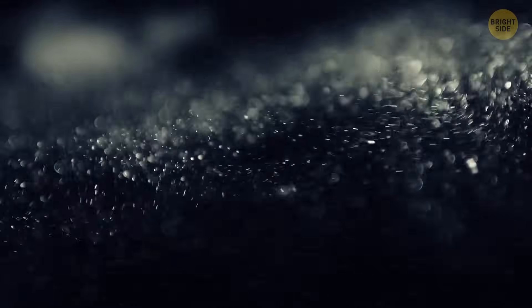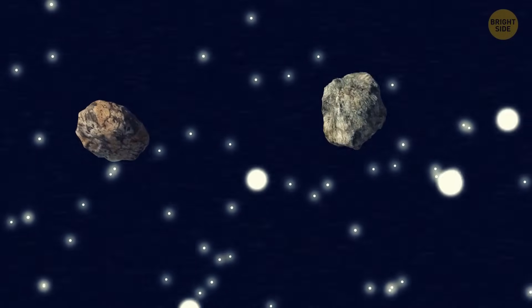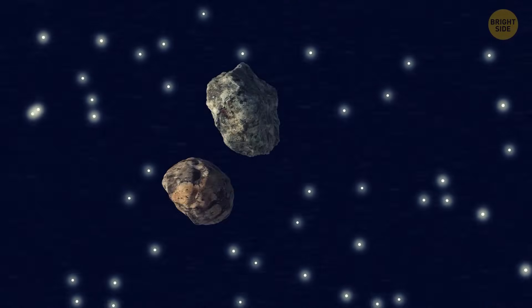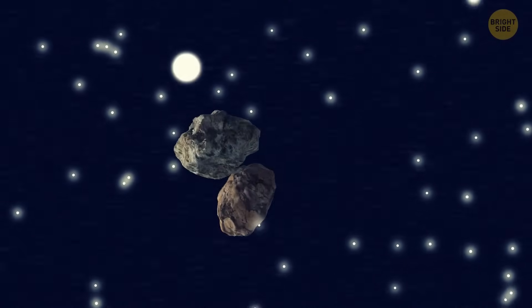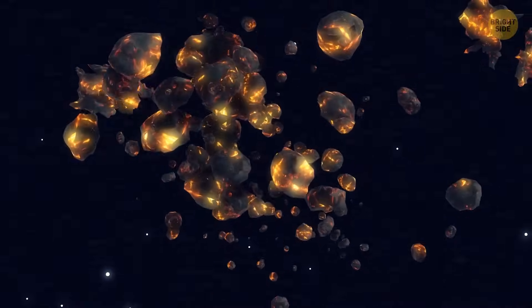Now, imagine these tiny dust particles and gas molecules dancing around in the disk. Sometimes, they bump into each other. And when they do, they stick together like Velcro. These little clumps of dust and gas are called planetesimals. They're the building blocks of planets.